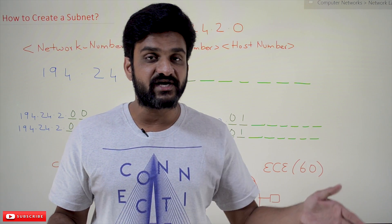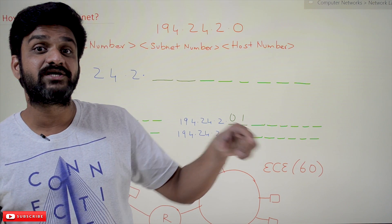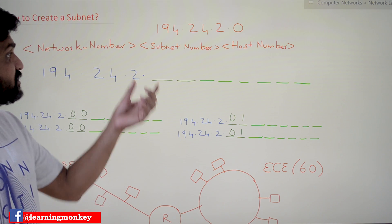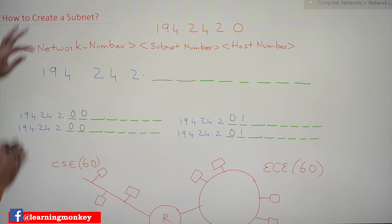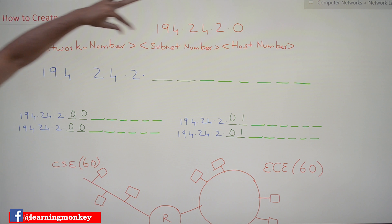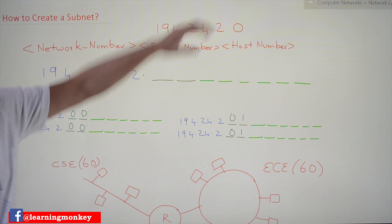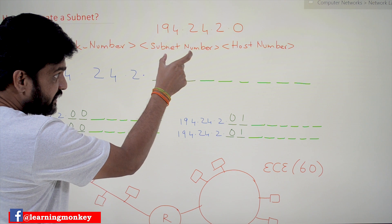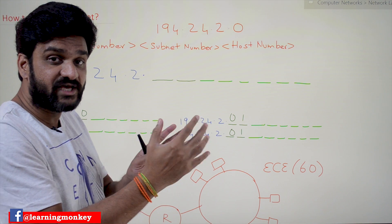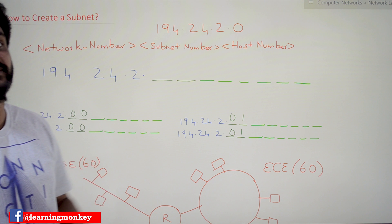The entire IP address is divided into two parts: the network ID and the host ID. Whenever we create a subnet, there is an additional part called the subnet number. So the entire IP address is now broadly divided into three parts: the network number, the subnet number, and the host number. The bits used for the subnet number are taken from the host ID portion.